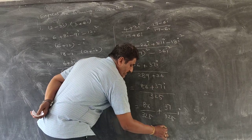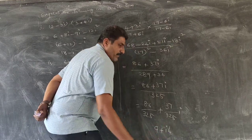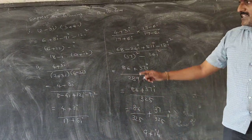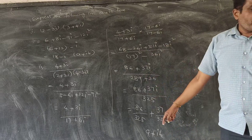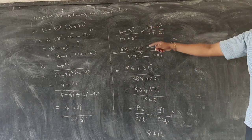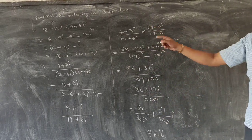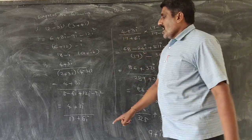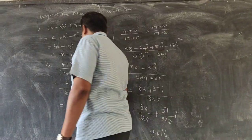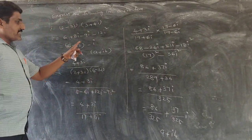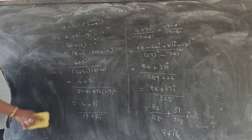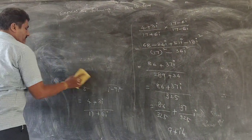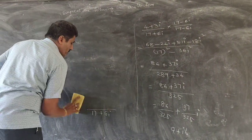That equals 86 by 325 plus 37 by 325 times i. Now we can observe that this is in the form of A plus iB. So in this way we can write complex numbers in A plus iB form, whether it is multiplication or division. Similarly we will see one more question.